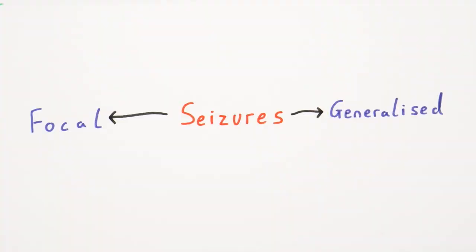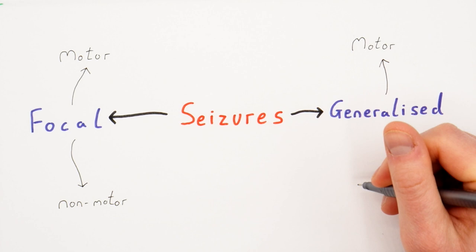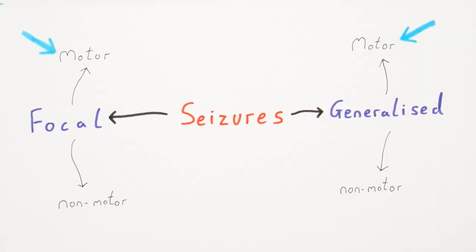Focal seizures means that the seizure originates in just one side of the brain. Generalized seizures means that the seizure originates in both sides of the brain. For both focal and generalized seizures you then have a further breakdown of motor seizures and non-motor seizures. A motor seizure causes involuntary change in muscle activity. The motor and non-motor seizures for focal and generalized then have many different subcategories.